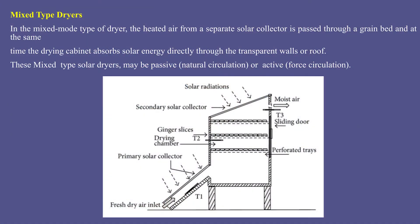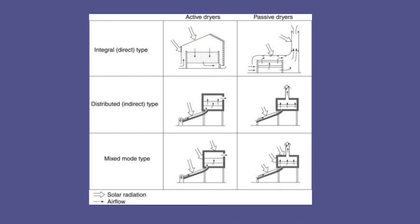In mixed type solar dryers, heated air from a separate solar collector is passed through a grain bed, and at the same time the drying cabinet absorbs solar energy directly through its transparent walls. This schematic diagram shows both the direct and indirect modes being utilized together in the mixed mode dryer. These mixed type solar dryers may again be passive or active. Direct, indirect, and mixed mode dryers can be classified on the basis of active and passive modes of operation.